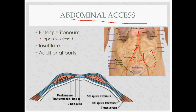The open technique involves cutting down through the layers of the abdominal wall under direct visualization, then placing ports and insufflating with CO2. The closed technique uses the Veress needle. You incise the skin just below the belly button, reach the fascia, pull up on the abdominal wall, and pop the needle in — you will hear two pops and a click.